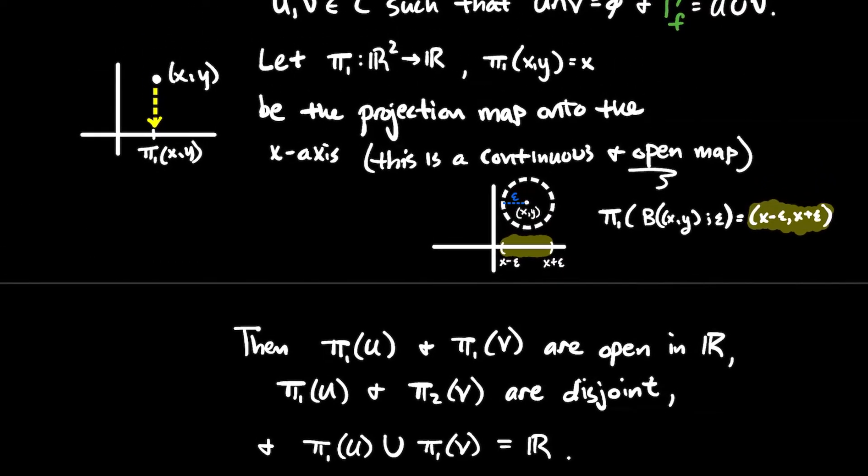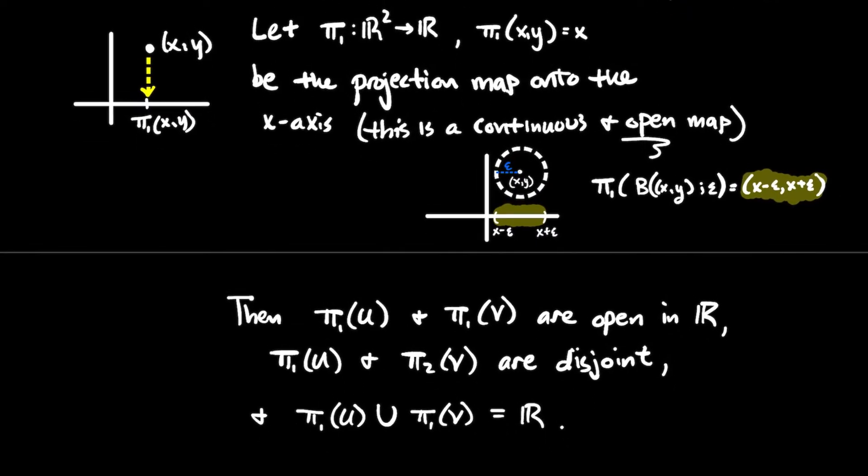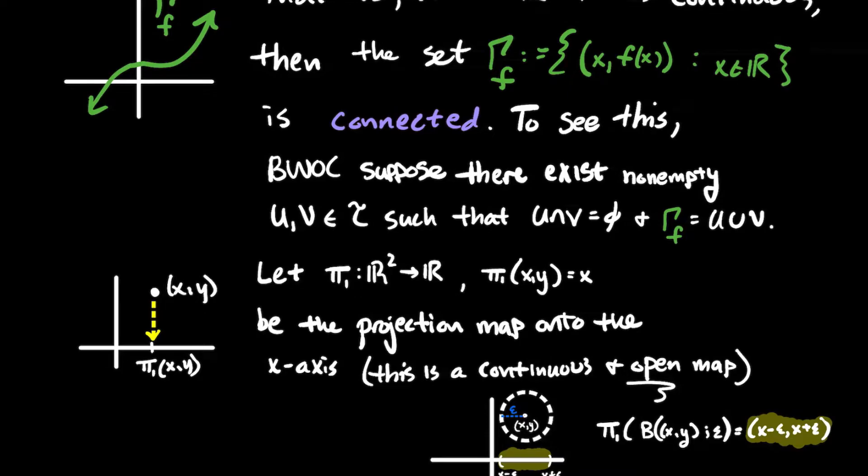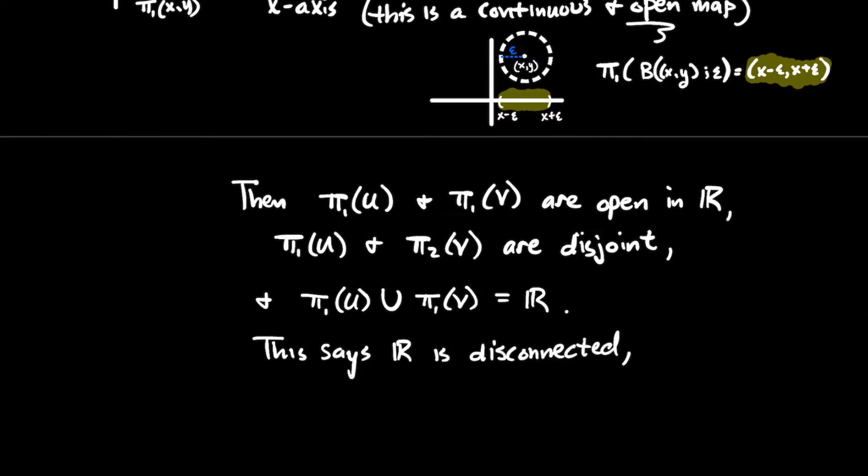Because what did I assume that it did? It split up this function, right? And so I know that function goes along the whole real line. Where is the function? Oh, he's up there. Cool. Okay, so what does this say? What we've just shown, if you think about these three little sentences here: π1 of U and π1 of V are open, π1 of U and π1 of V are disjoint, and π1 of U union π1 of V is equal to R, that just showed that the real line is disconnected. But of course, that's a contradiction, because we talked earlier about the real line is a connected set.